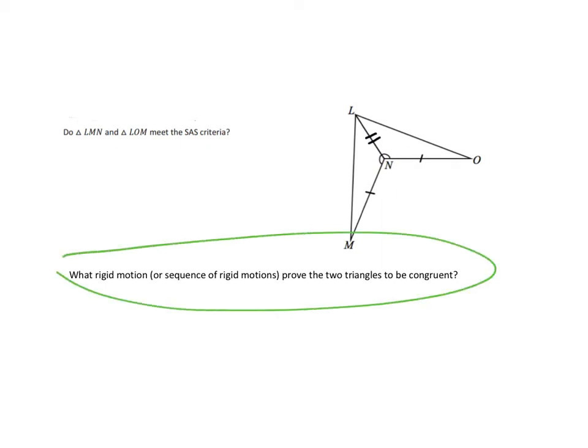Now the second question says: what rigid motion, or sequence of rigid motions, which just means more than one or a composite transformation, prove that the two triangles would be congruent?